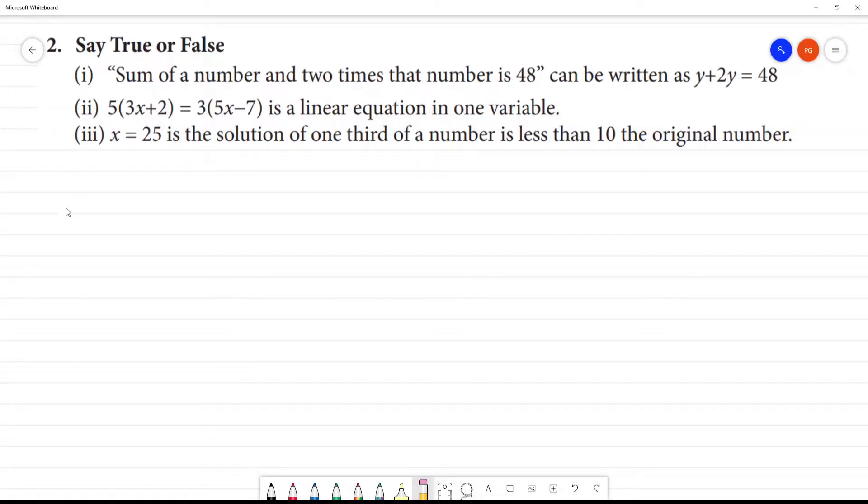Take two. First of all, sum of a number and two times that number is 48. It can be written as: let a number be x, so the number is x, and we have two times that number.